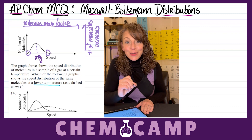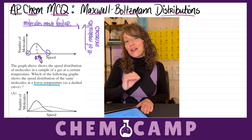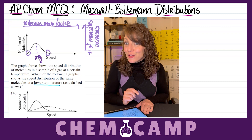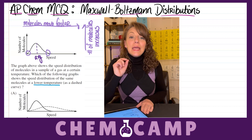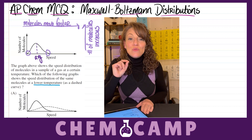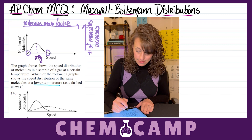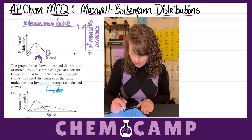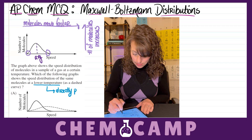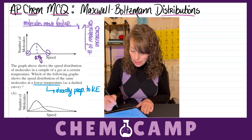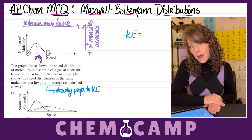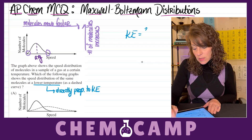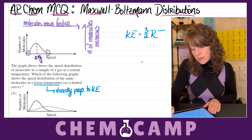What you have to remember is that anytime you're talking about temperature on the Kelvin scale — which you're going to want to use when dealing with gases — that Kelvin temperature is directly proportional to kinetic energy. If you look at your reference sheet, one of the kinetic energy formulas on that reference sheet is going to be 3/2 R times T.